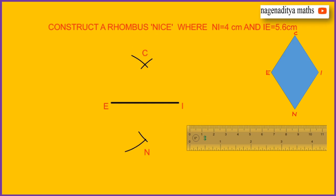Now join E and C, C and I, N and I, and N and E. Connect all four vertices: E, C, I, N to complete the rhombus.